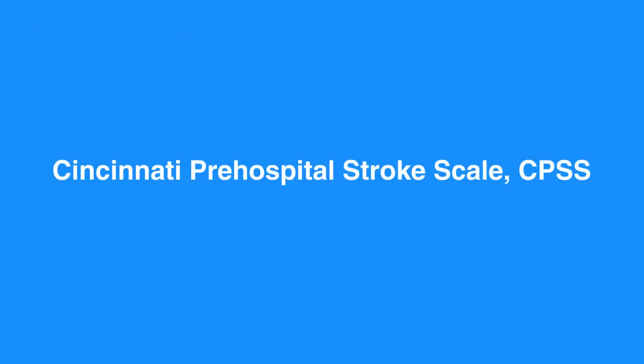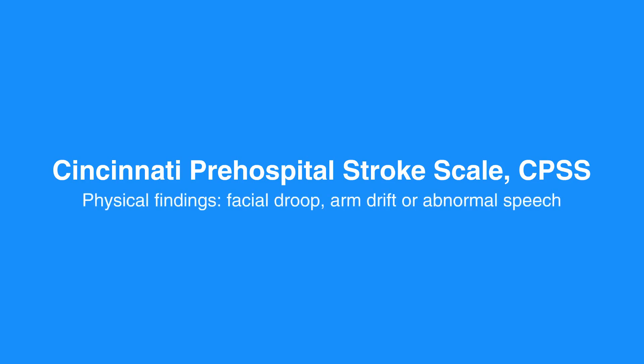The Cincinnati Pre-Hospital Stroke Scale, or CPSS, is used to diagnose the presence of stroke in an individual if physical findings such as facial droop, arm drift, or abnormal speech are seen. Individuals with one of these three findings as a new event have a 72% probability of an ischemic stroke. If all three findings are present, the probability of an acute stroke is more than 85%. Becoming familiar and proficient with the tool utilized by the rescuer's EMS system is recommended. Mock scenarios and practice will facilitate the use of these valuable screening tools.